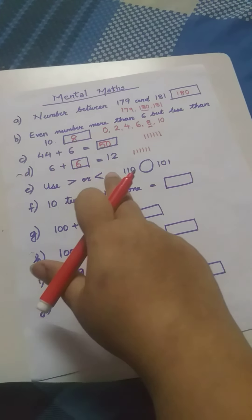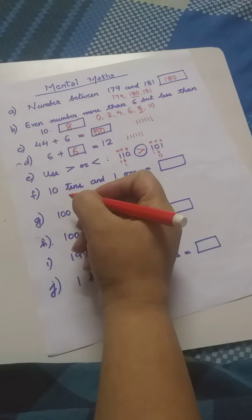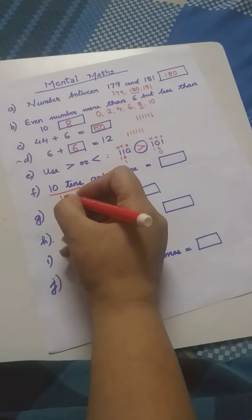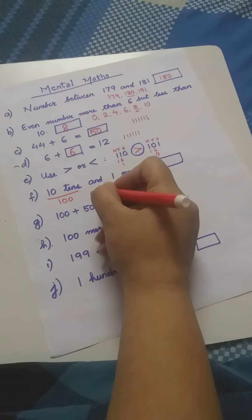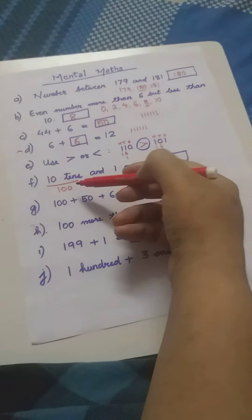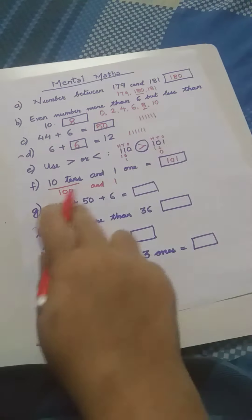Next question: 10 tens and 1 one. It is not 10 ones — it is 10 tens. What is 10 tens? 1 ten is 10, 2 tens is 20, 3 tens is 30, 4 tens is 40, 5 tens is 50, 6 tens is 60, 7 tens is 70, 8 tens is 80, 9 tens is 90, 10 tens means 100. Then 1 one remains 1. Since there is no number in the 10's place, we write 0 there. So the answer is 101.